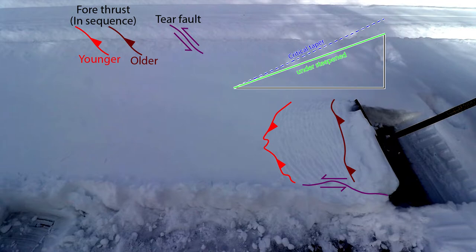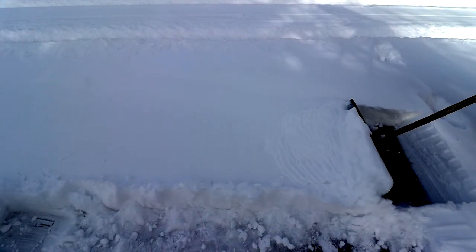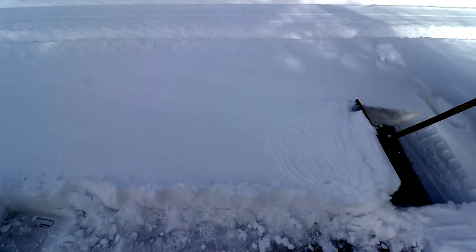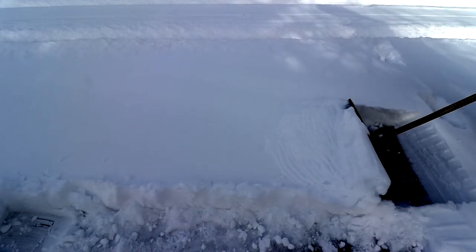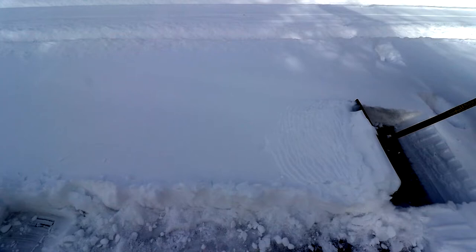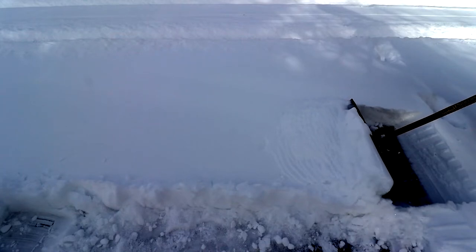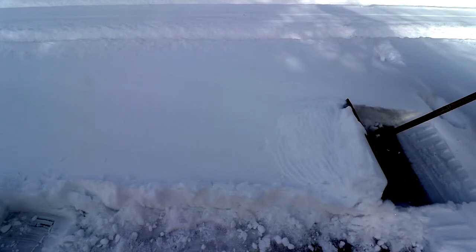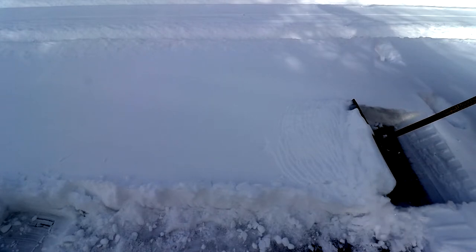Based on what happens next, the fold and thrust belt must be under-steepened with respect to the critical taper, or the equilibrium slope of the wedge, as schematically shown. In the next segment, one out-of-sequence thrust takes up most of the deformation, and you can see the wedge taper increases to become closer to what the critical taper, or equilibrium taper, must be for this fold and thrust belt, based on the strength of the snow and the strength of the décollement.